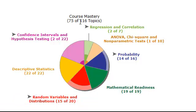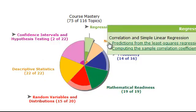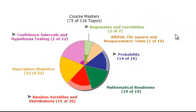And you can see overall there are 116 topics grouped into seven categories. You've got regression, you've got chi-square, you've got probability, mathematical readiness, random distributions, descriptive statistics, confidence intervals.